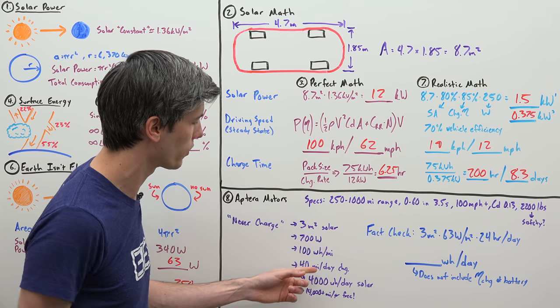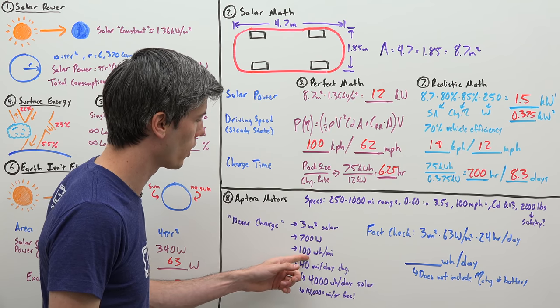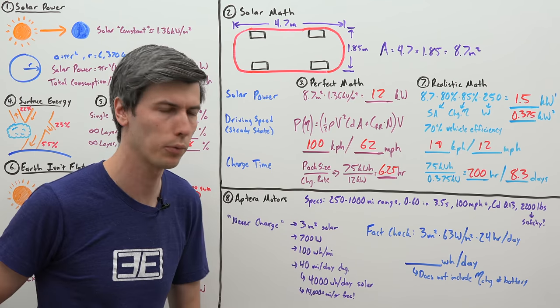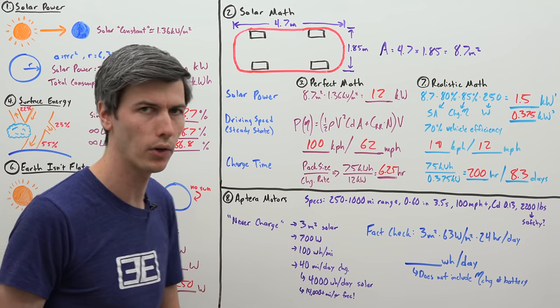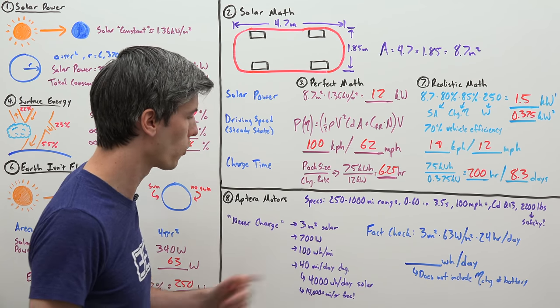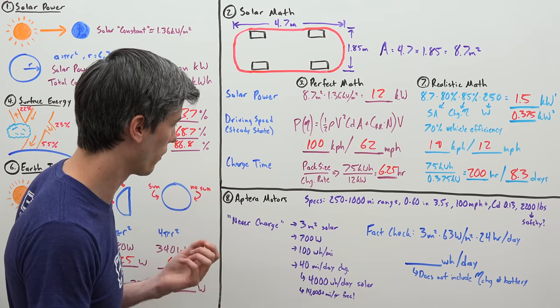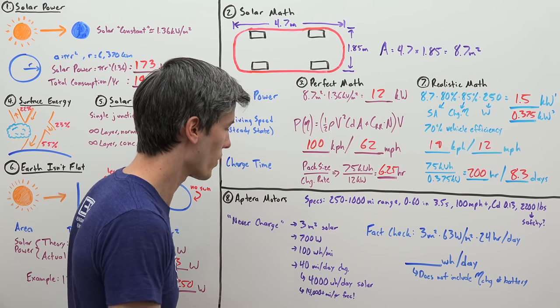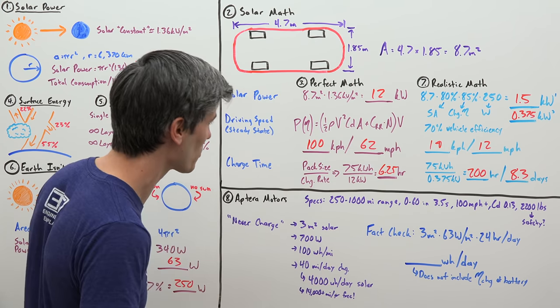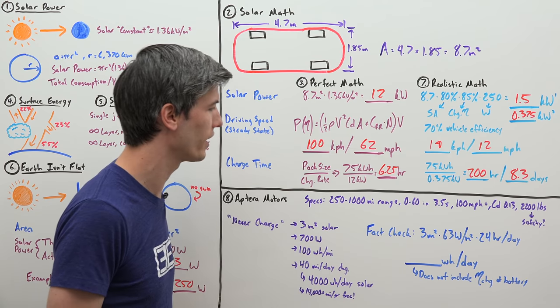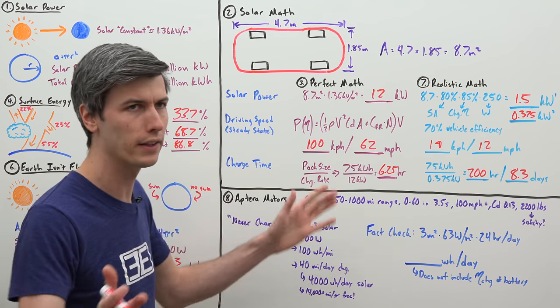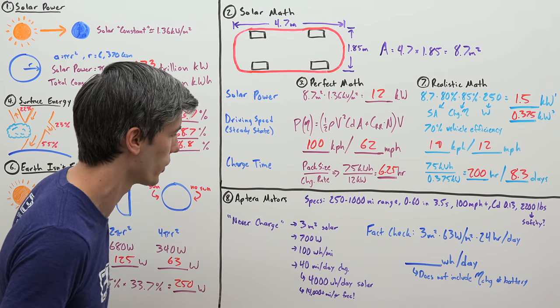Now they say the solar panels on the car are good enough to give the car 40 miles of range each day. So if we're getting 40 miles of range each day and we know our efficiency is 100 watt hours per mile, then that means our solar panels are charging, giving the battery 4,000 watt hours of energy each day. And so that's about 14,000 miles, a little over 14,000 miles in a year that you could drive for free. The solar panels are going to take care of all of that energy.